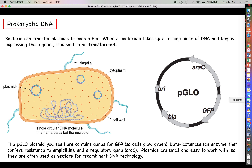The other gene called araC is a regulatory factor involved in an operon that regulates the expression of the GFP gene — we'll talk about operons a little later. In addition to naturally occurring plasmids, plasmids are very commonly genetically engineered and used in recombinant DNA technology as vectors for inserting genes of interest. For example, you can insert the gene for insulin into a plasmid like this, transform bacteria with that plasmid, and under the right conditions those bacteria should start making the insulin you want.